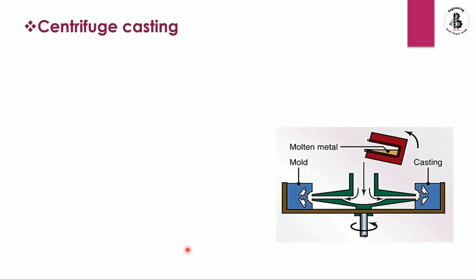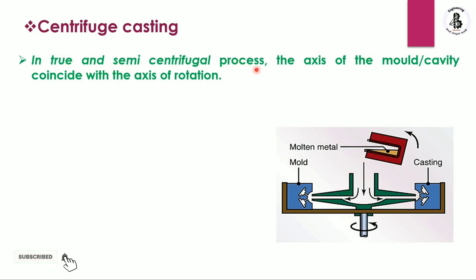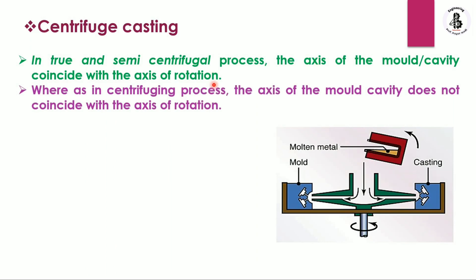This is our basic setup. This is our rotating shaft, and it is connected with the mold. This whole assembly rotates on its vertical axis. In the true and semi-centrifugal processes, the axis of the mold cavity coincides with the axis of rotation. But in the case of the centrifuging process, the axis of the mold cavity does not coincide with the axis of rotation. That is the basic difference between all three processes, but in all three we use centrifugal force for producing the casting products.